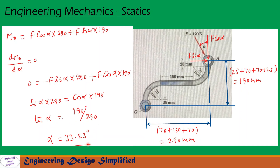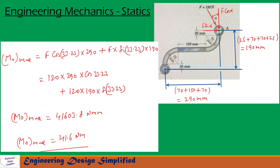This is the value of alpha for which the moment due to force F about O is maximum. To find the maximum moment, we substitute alpha equal to 33.23 degrees back into the moment equation. After substitution and simplification, M_O max equals 41,603.8 Newton-millimeter, which converts to M_O max equal to 41.6 Newton-meters.